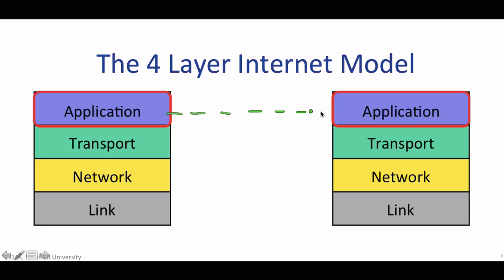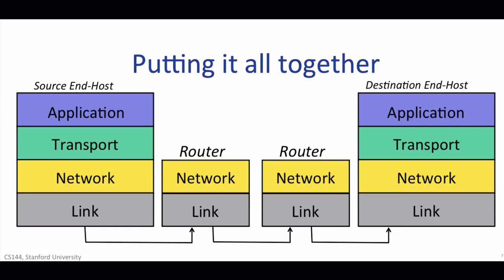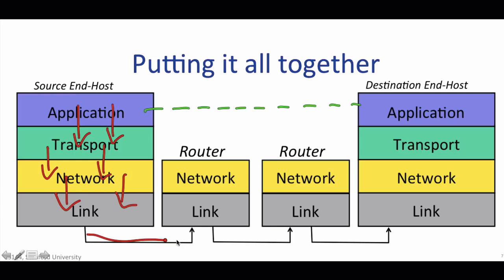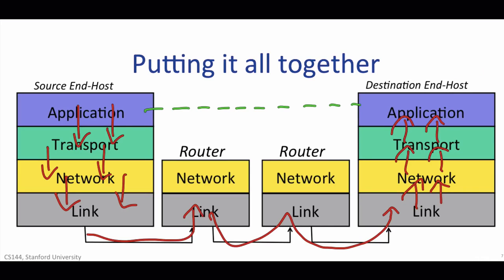We say that each layer communicates with its peer layer. It is as if each layer is only communicating with the same layer at the other end of the link or internet, without regard for how the layer below gets the data there. Putting it all together, network engineers find it convenient to arrange all the functions that make up the internet into layers. At the top is the application — such as BitTorrent, Skype, or the World Wide Web — which talks to its peer layer at the destination. When the application has data to send, it hands the data to the transport layer, which has the job of delivering the data, reliably or not, to the other end. The transport layer hands it to the network layer, which breaks the data into packets each with the correct destination address. Finally, the packets are handed to the link layer, which delivers the packet from one hop to the next along its path. The data makes its way hop by hop from one router to the next until it reaches the destination, where the data is passed up the layers until it reaches the application.